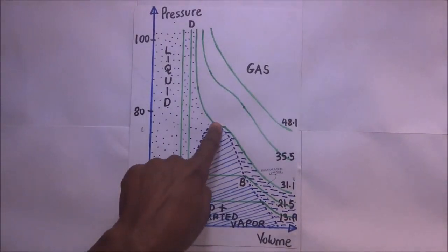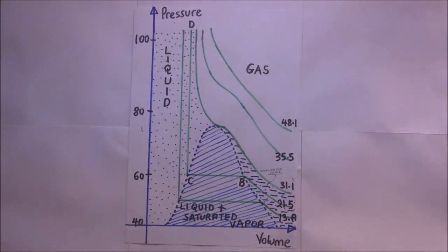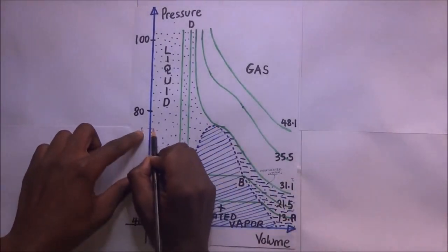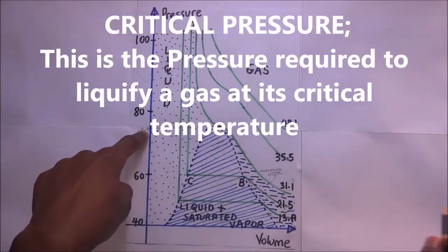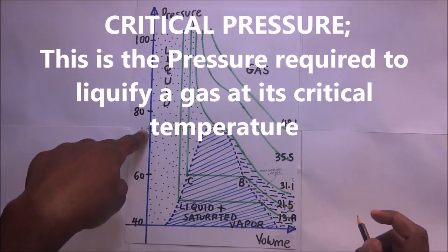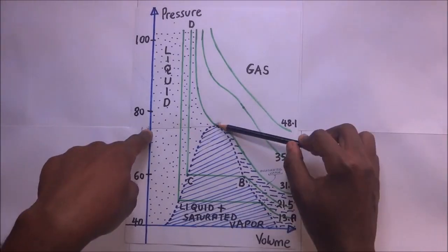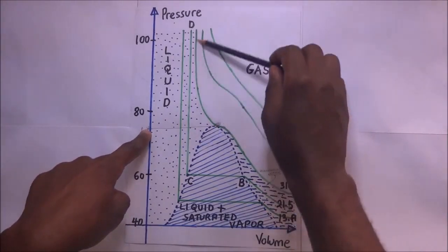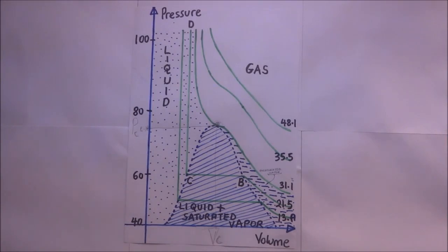Now that we have established the critical temperature, we have what we call the critical pressure. The critical pressure is the minimum pressure that will cause liquefaction of a gas at its critical temperature. For Andrew's experiment using carbon dioxide, the critical pressure is around 73 atmospheres. This figure varies for other gases.